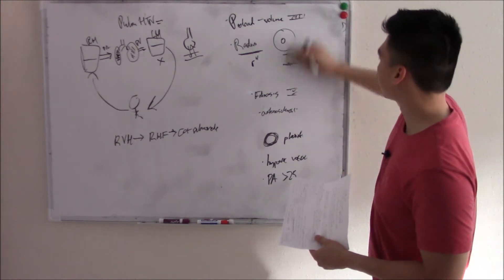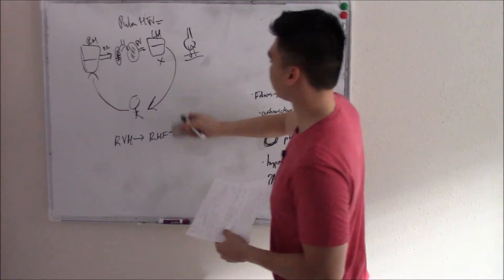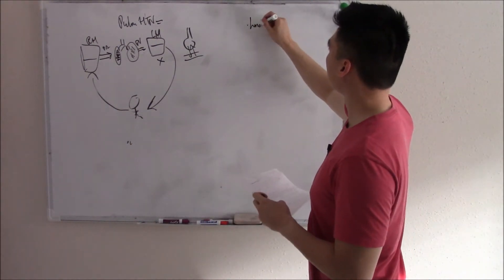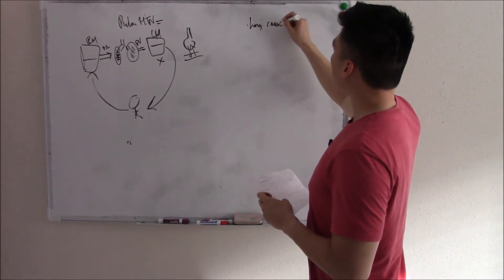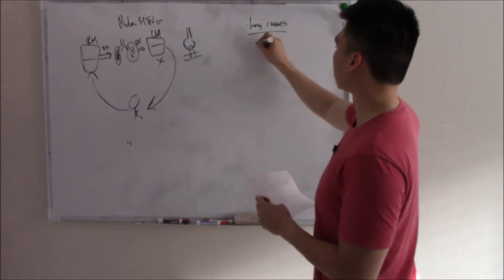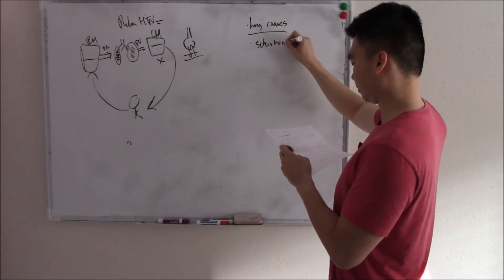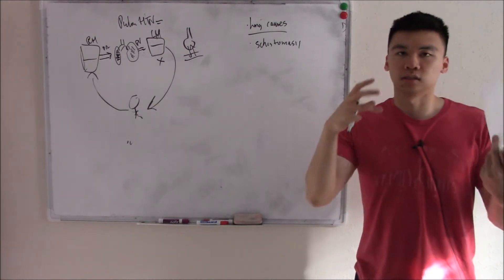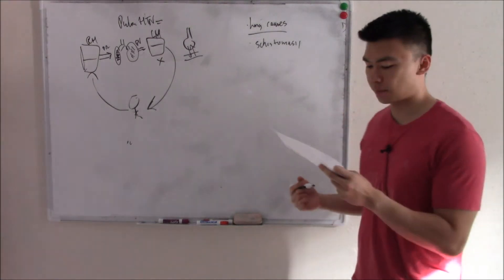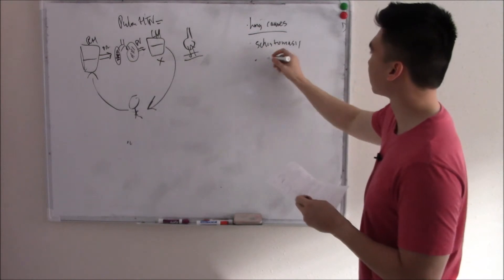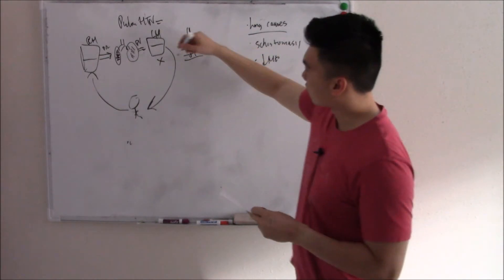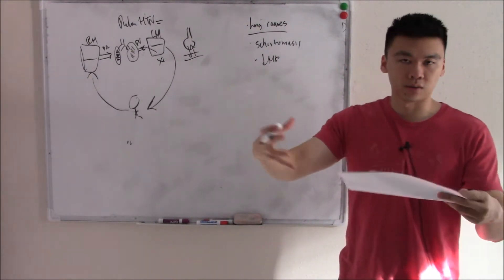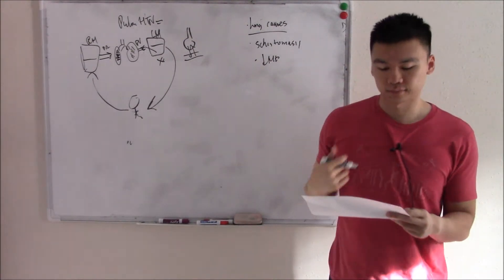So what causes pulmonary hypertension? Lung causes are a big one, especially in the developed world. In the developing world, you have something called schistosomiasis — basically a worm that can go into your lungs, damage your lungs, cause fibrosis, cause that narrowing, causing hypertension. You can also have left heart failure: fluid builds up, creating more volume, more congestion, more edema, and hypertension.